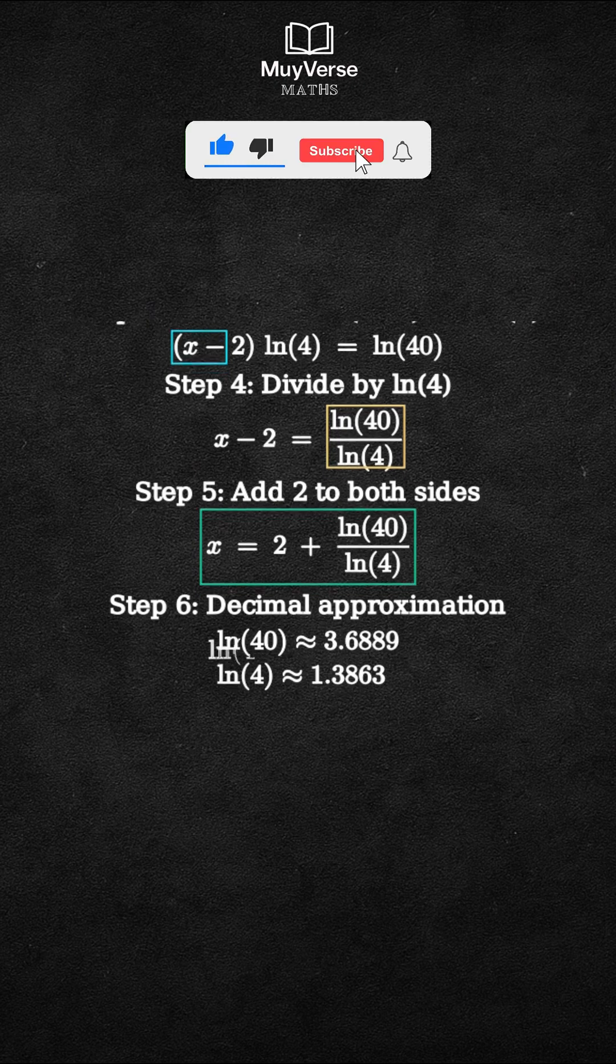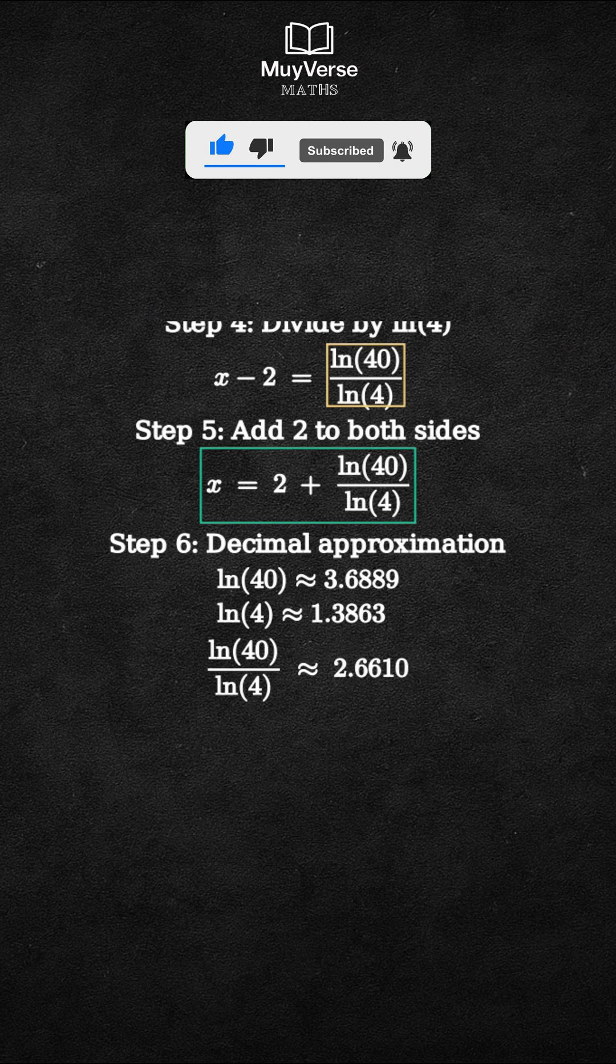Therefore, x is approximately 2 plus 2.6610, which is 4.6610.